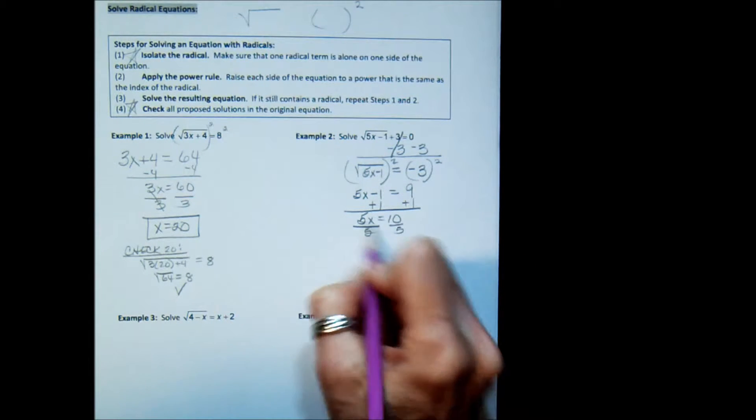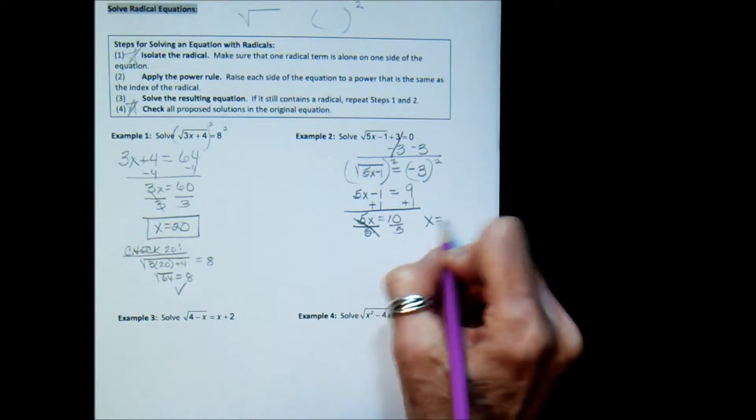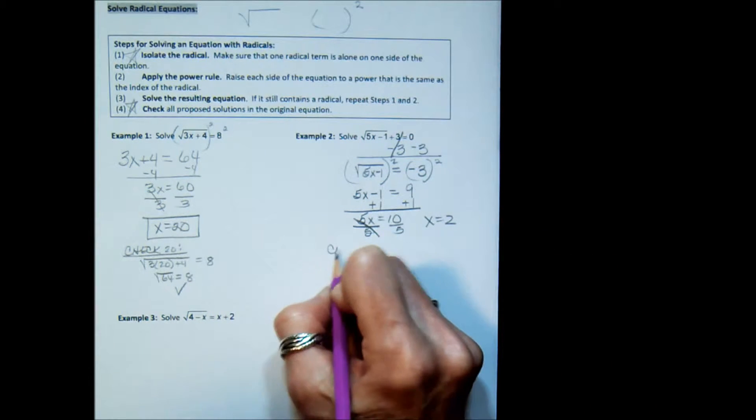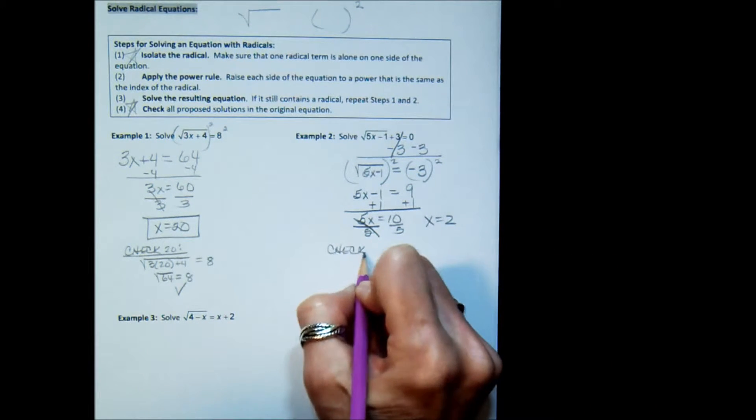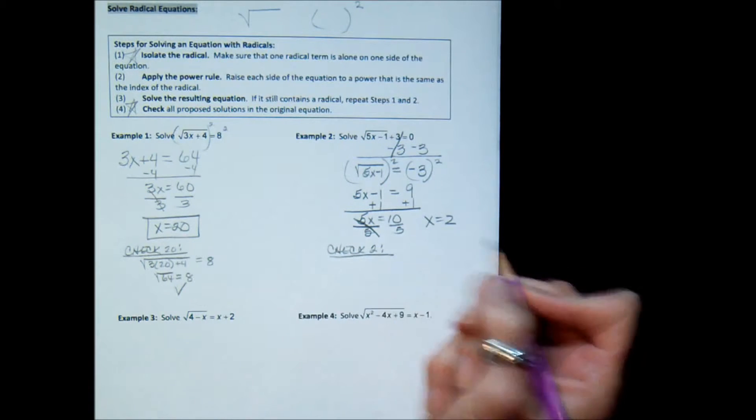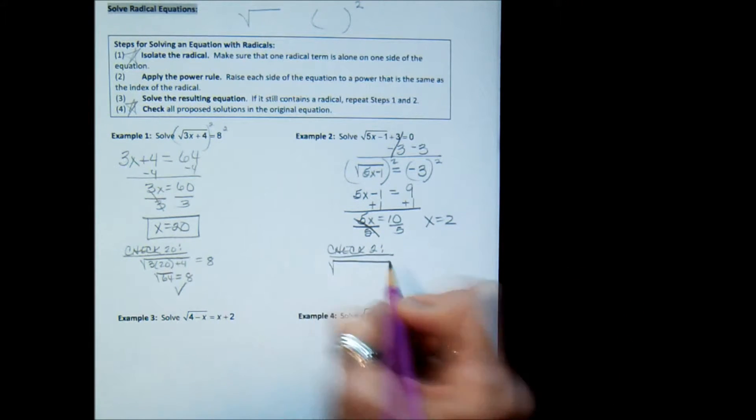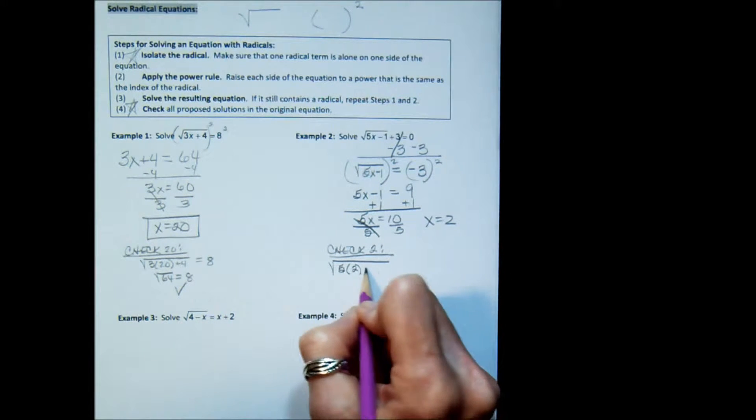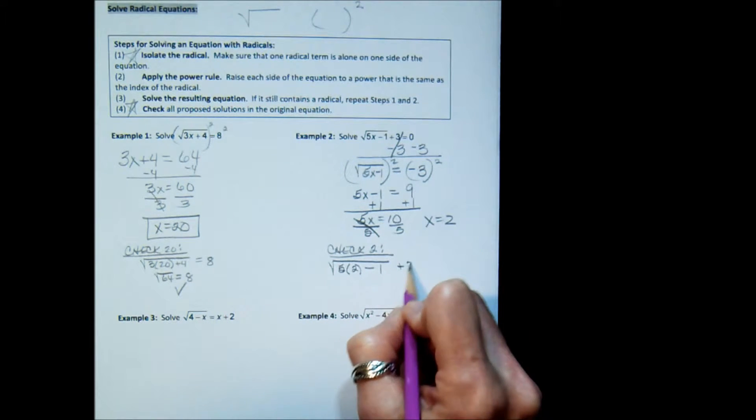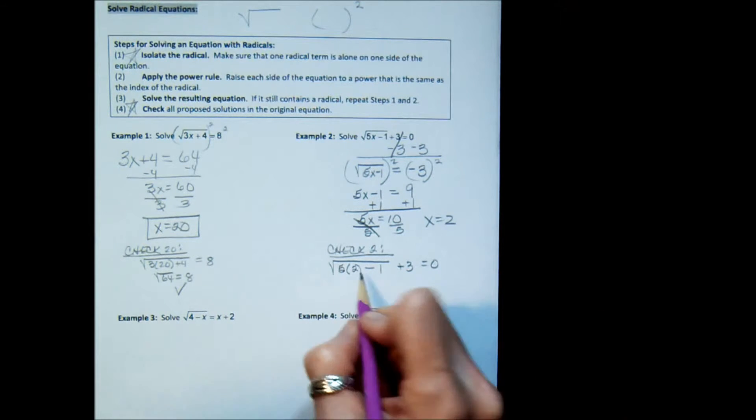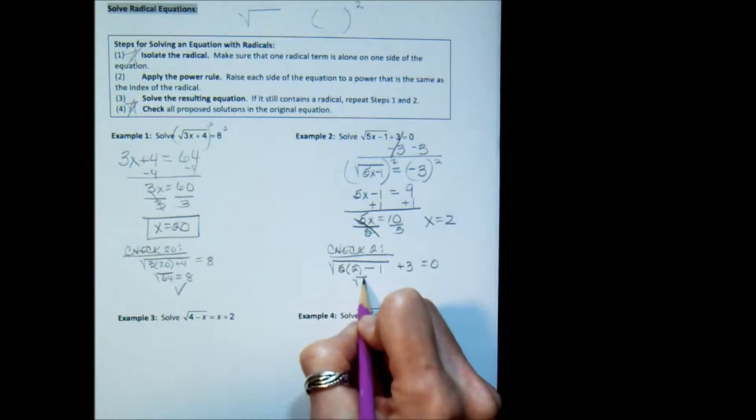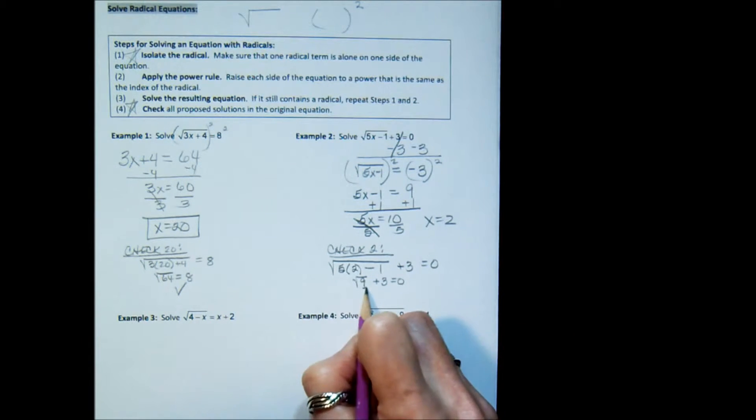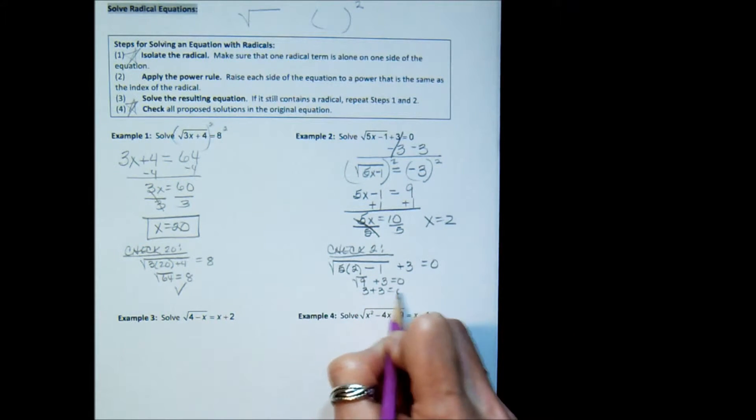Add a 1 to both sides. I get 5x equals 10. Divide by 5 and I get x equals 2, maybe. So again, we're going to check our solution in the original equation. That would be the square root of 5 times 2 minus 1, plus 3. Does that equal 0? Is the square root of 9 plus 3 equal to 0? Is 3 plus 3 equal to 0?